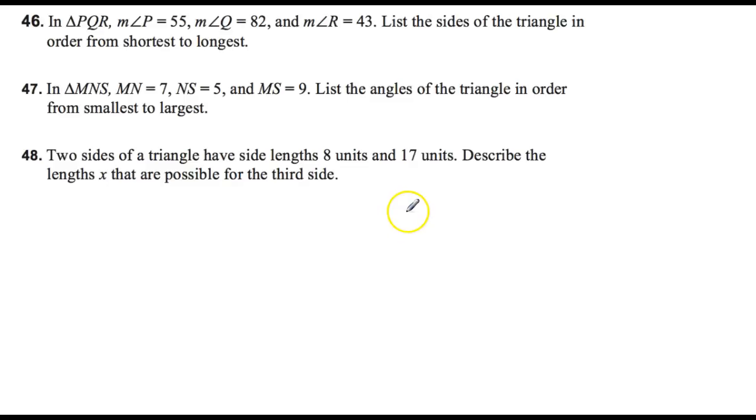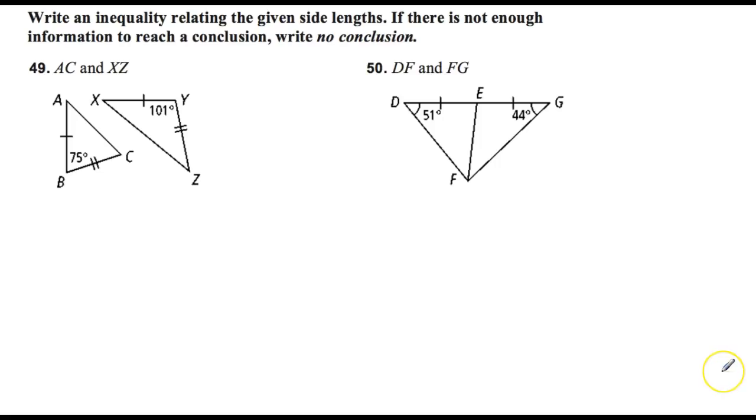48. We've done a couple of these in class. If you're drawing it out, we know 1 is 8 and 1 is 17. This is X. What are the possible values for X here? So X has to be less than something and then greater than something. This goes back to when we worked with the pasta noodles. So I want you to try that one out as well. Look back in your homework to get a little extra help there.